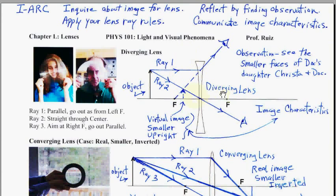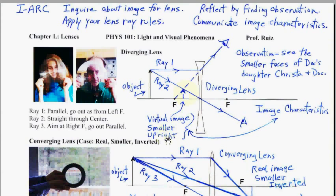Finally, we communicate the results — the characteristics of the image. Along with the diagram, we communicate these three things: virtual image, since we used the dotted line to get there; smaller, the baby face; and upright. And we've got the image characteristics.